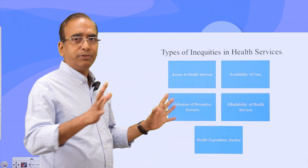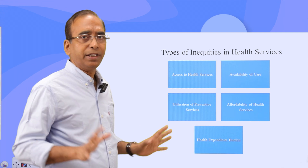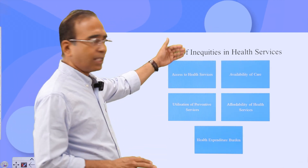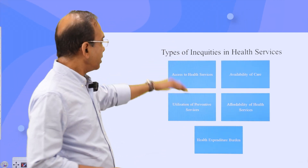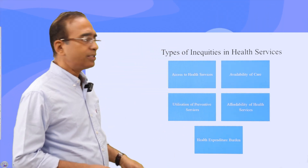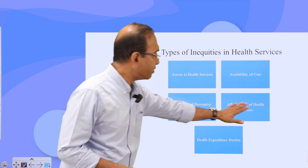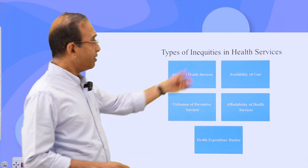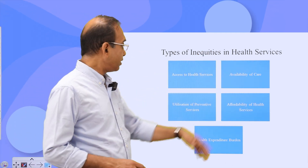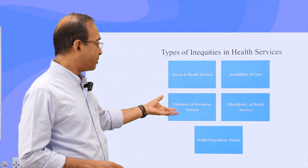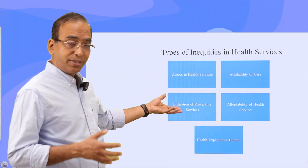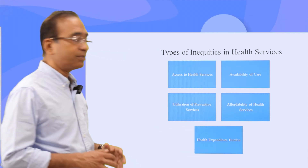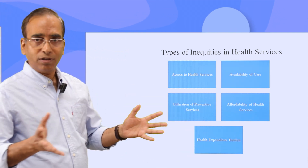The rural-urban divide in terms of the health care system is still very prevalent. The main inequities are: access to health services, affordability of health services, availability of care, utilization of preventive services, and finally, the overall burden of health expenditure.